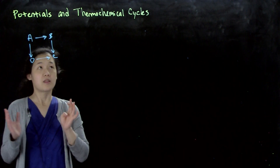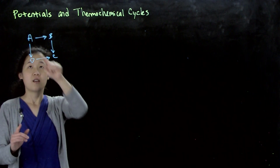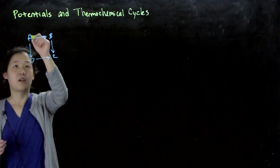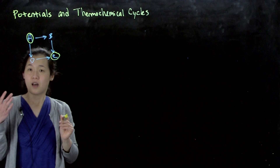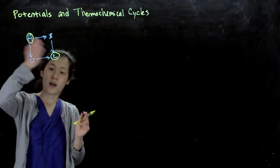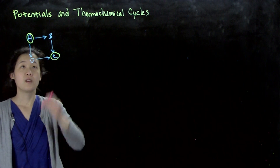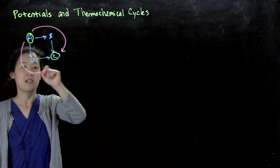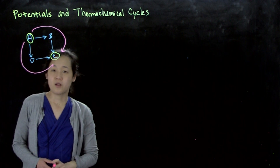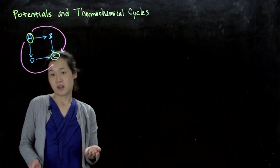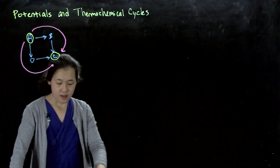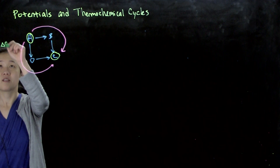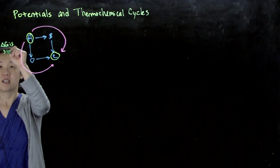The part about a thermochemical cycle is that these reactions are all related. Suppose you want to go from compound A to compound C — we could go different pathways, right? We could go A to B to C, or we could go A to D to C. You might think that they're different energies, but the key point is delta G is a state function. Free energy is a state function.